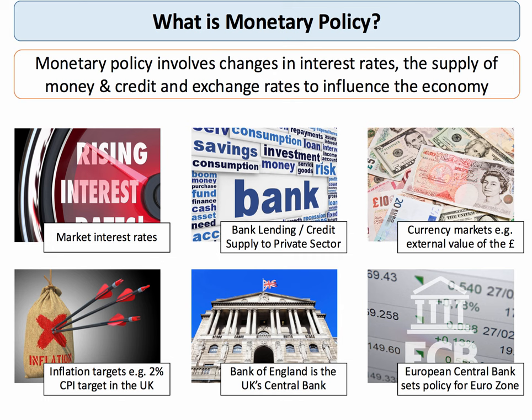Monetary policy, according to the Bank of England, is price stability. Most of us would define monetary policy as changes in interest rates, the supply of money, the supply of credit, and also exchange rates. This is a key revision point — a lot of people forget that the exchange rate is an important part of monetary policy. It's about the financial system and the willingness of banks and other lenders to provide lending to businesses and households. It's about currency markets, inflation targets, and the roles of central banks in managing monetary policy to meet their objectives.